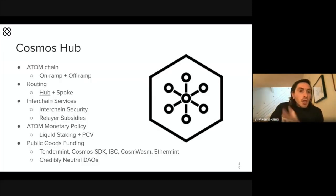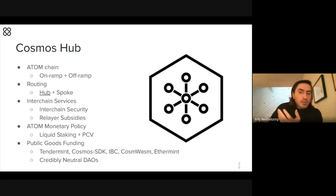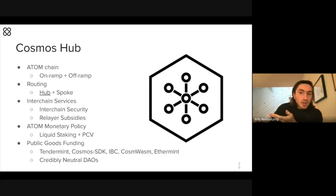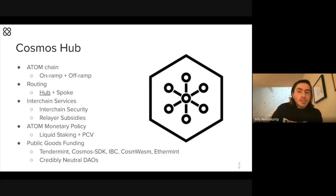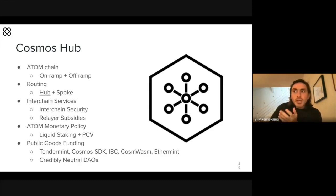CosmWasm has some interesting differences between its smart contracting level and EVM. The Cosmos Hub is the ATOM chain — the blockchain launched as the first Cosmos SDK chain. It's the proof of concept for Cosmos SDK chains, but also an important part of routing. In a world with thousands if not hundreds of thousands of chains, it's meant to be the hub for routing. It also provides interchain services like security — the ATOM validator set can be used to secure multiple blockchains — plus relayer subsidies to make sure IBC packets get relayed, and ATOM monetary policy.